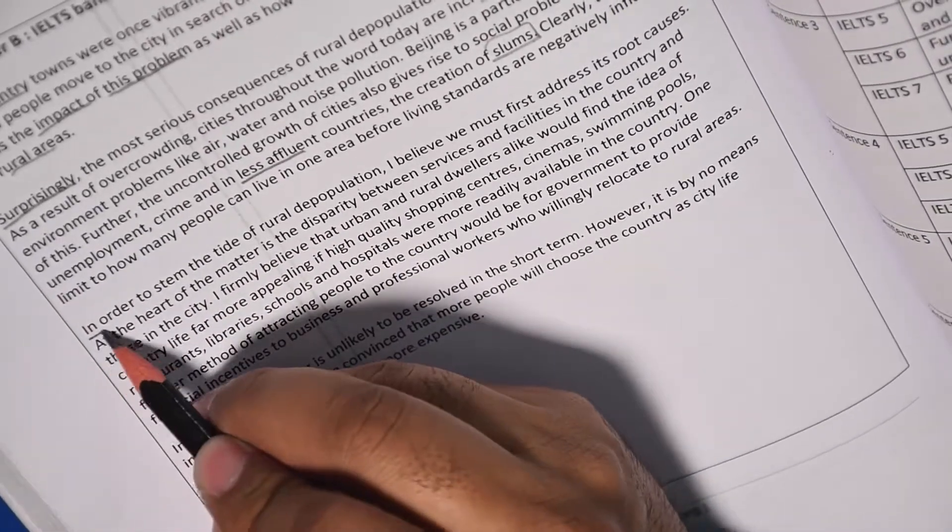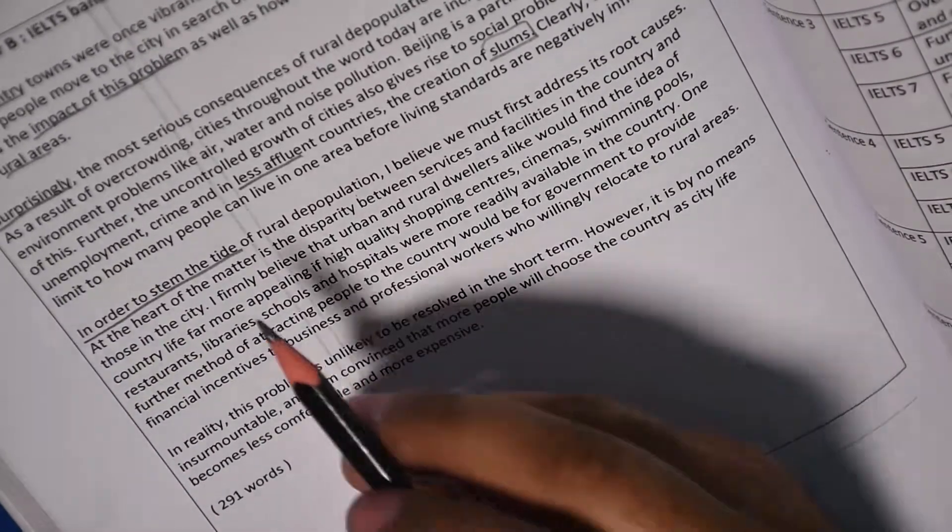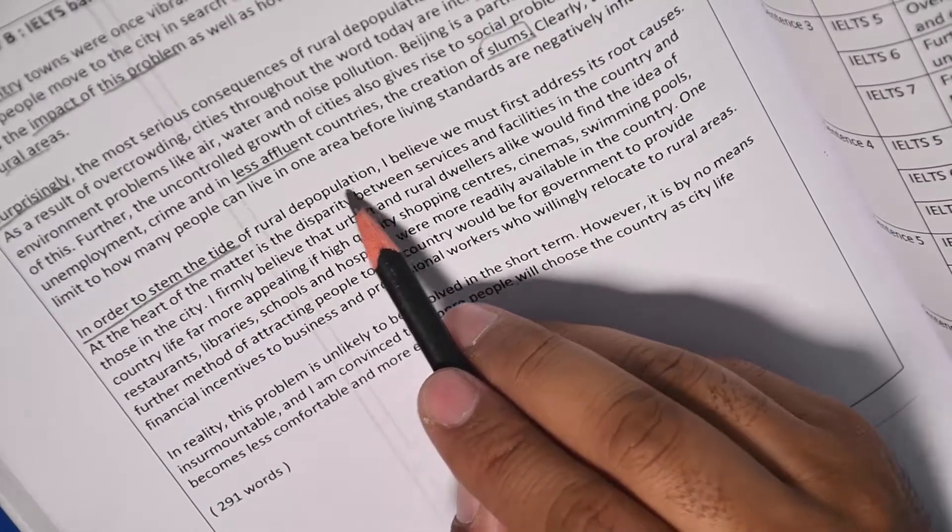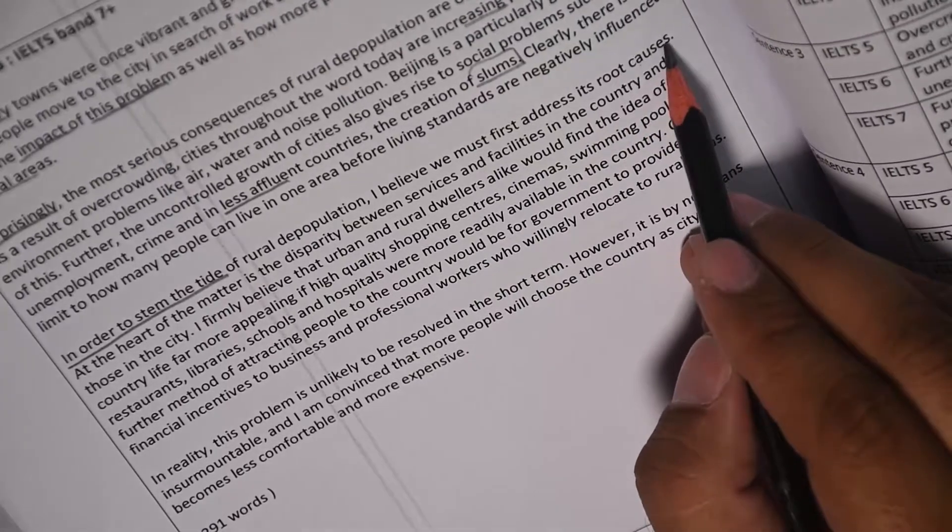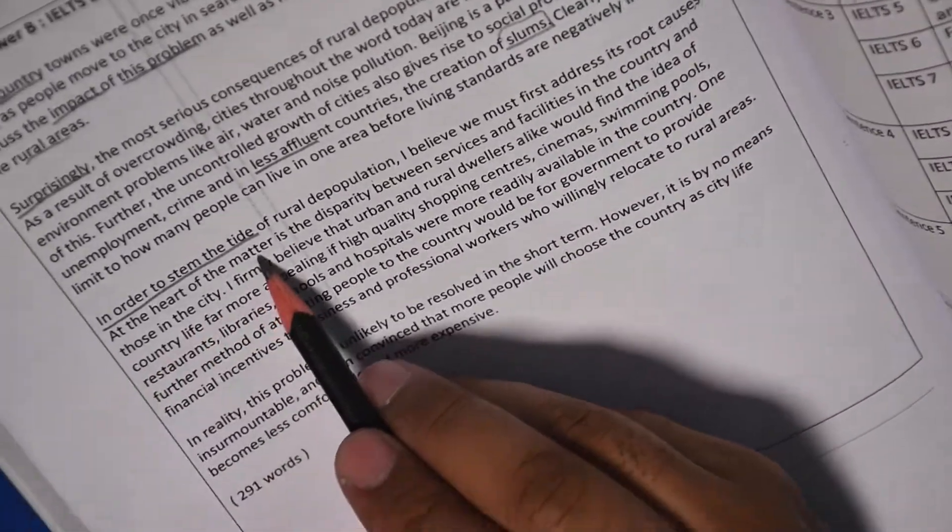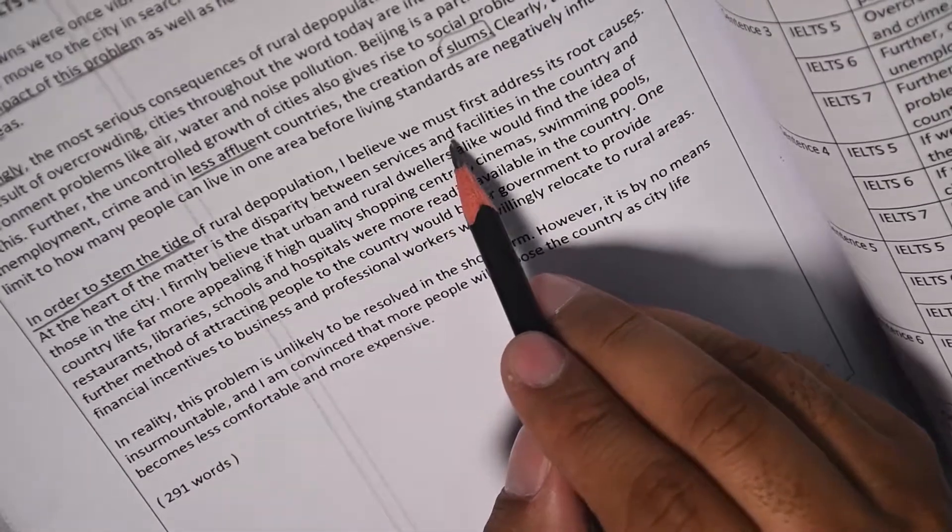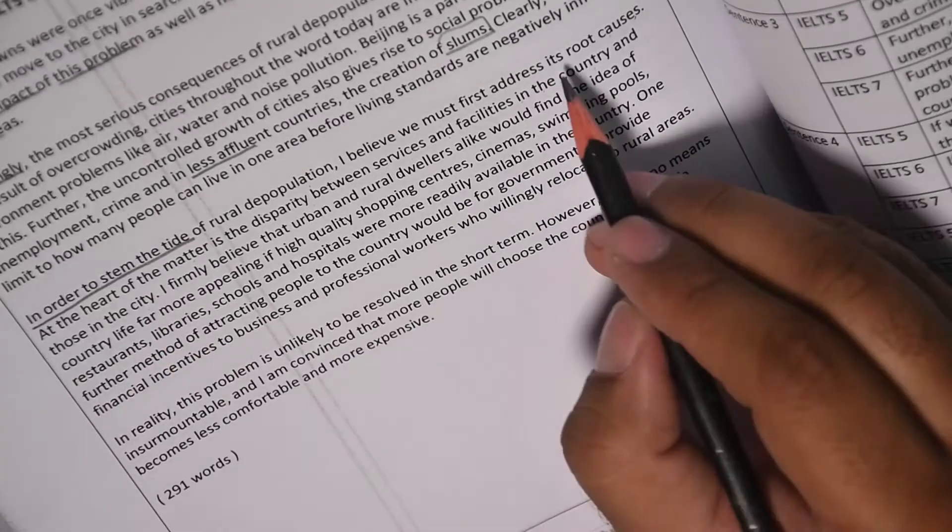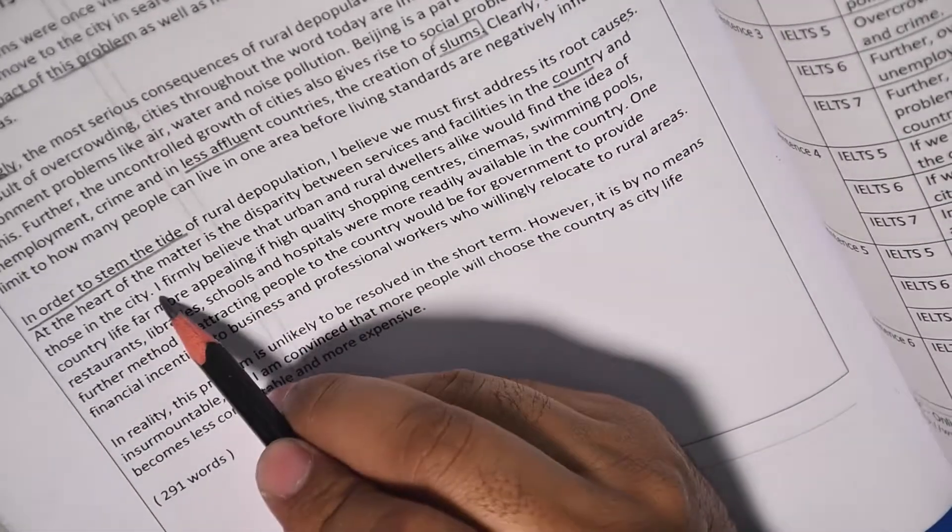Now, in order to stem the tide of rural depopulation - in order to stem means in order to control, this is very good vocabulary - I believe we must first address its root causes. At the heart of the matter is the disparity between services and facilities in the country and those in the city.